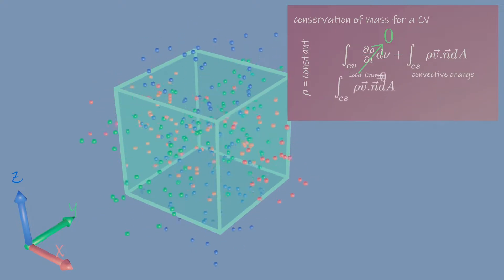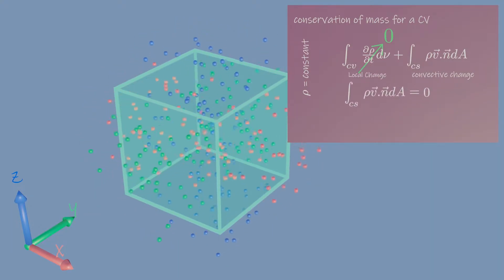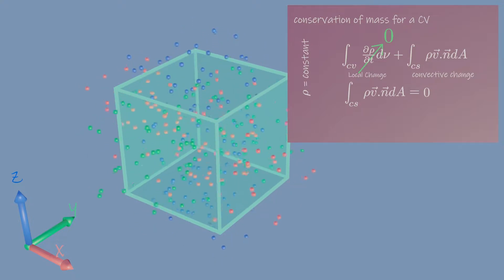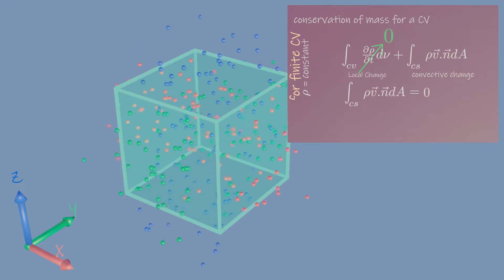It means the net mass flow into and out of the open control surfaces must be zero. In other words, what flows in must flow out.